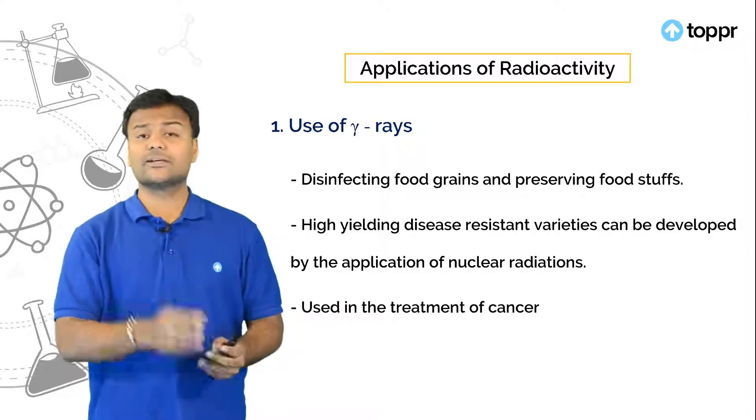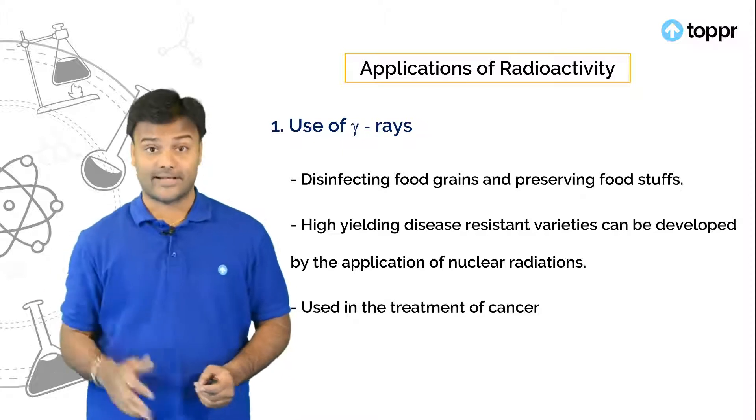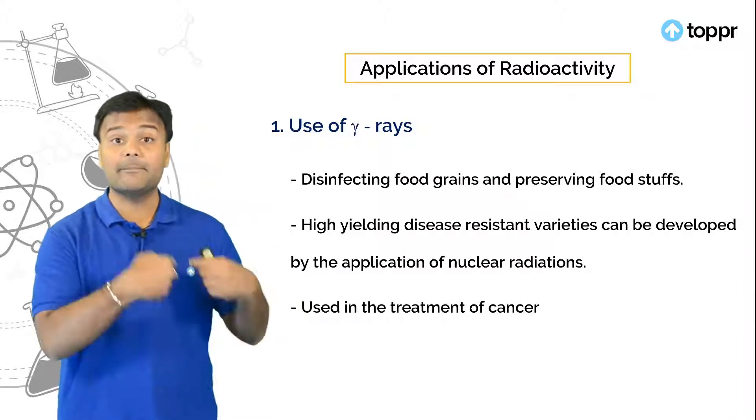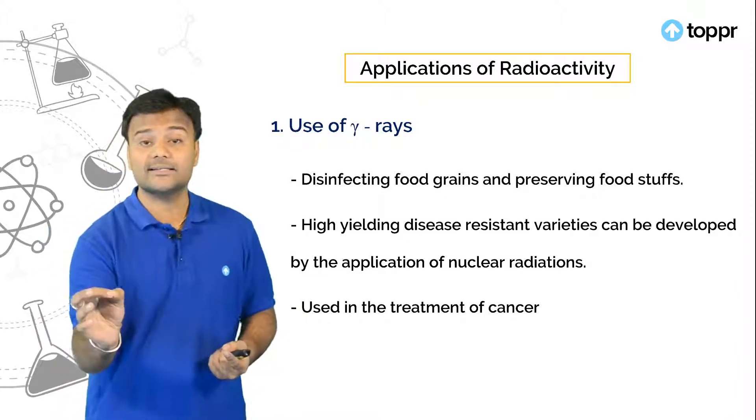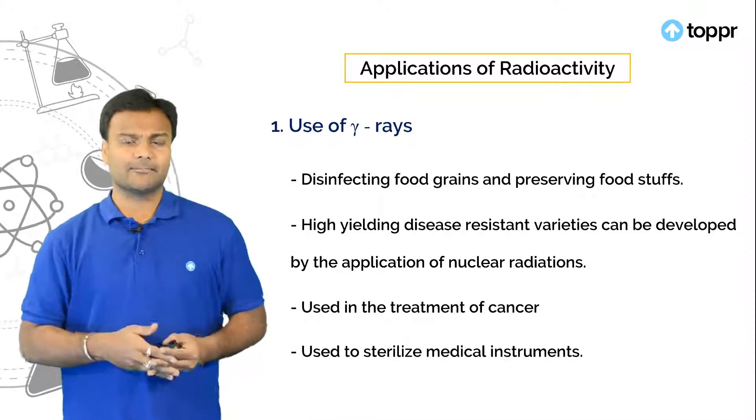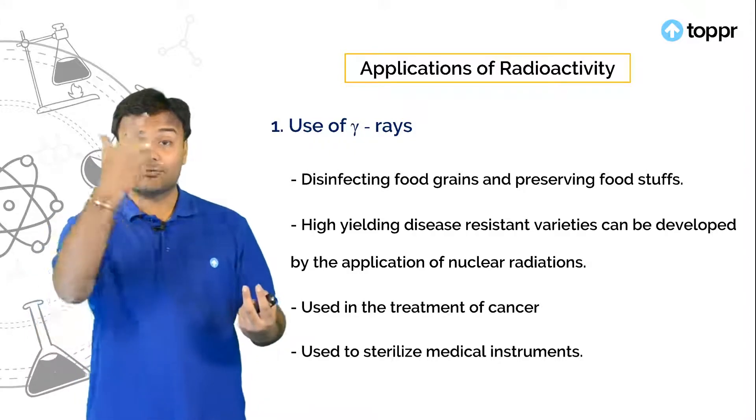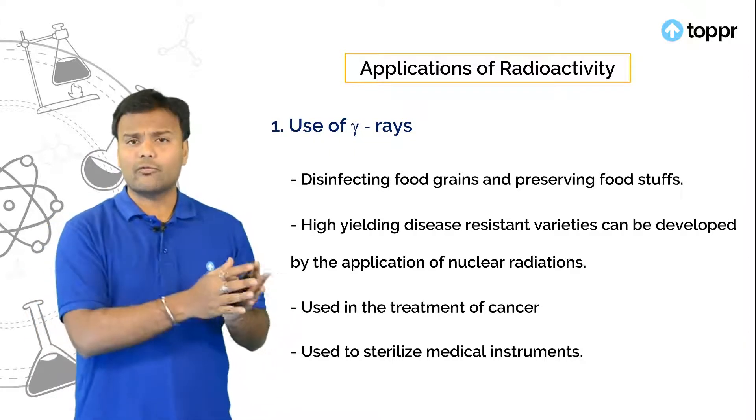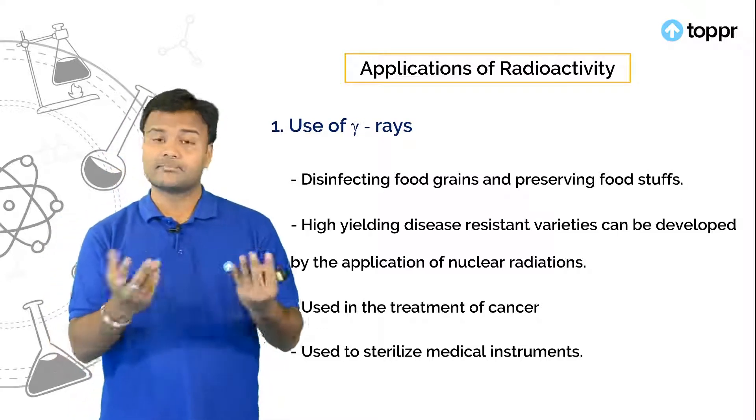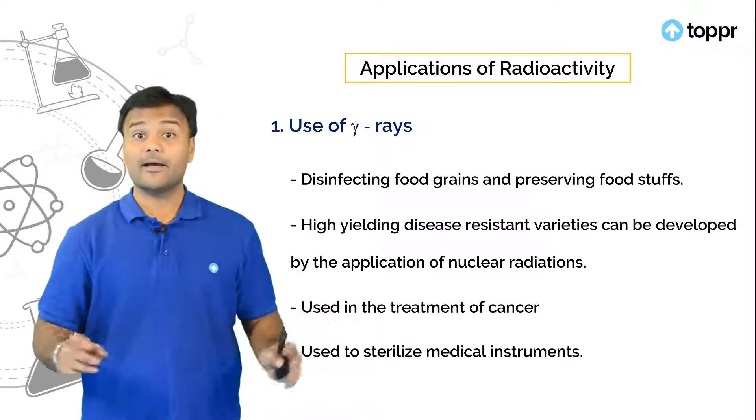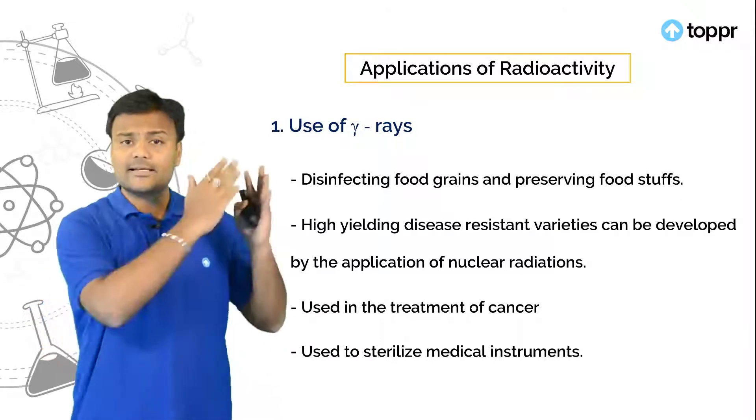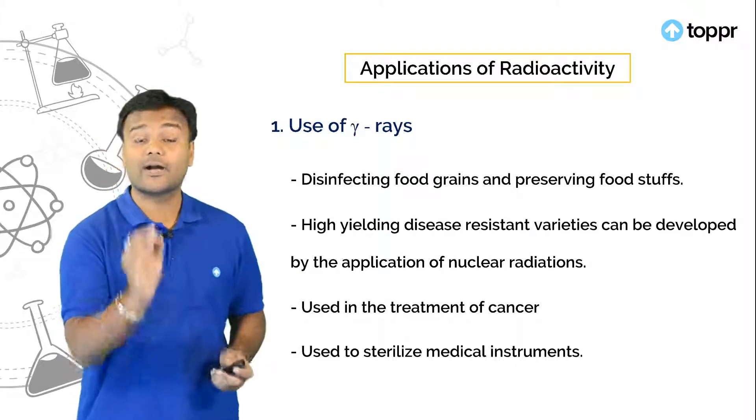And we also use these gamma rays in the treatment of cancer. Especially cobalt 60. That means gamma radiations emitted by cobalt 60 will be useful in the treatment of cancer. Also if you see like syringes or blood transfusion plastics, so how do you sterilize those? If you boil it plastic or rubber then they undergo degradation. But those can be sterilized using gamma radiation. So these are the some of the uses of gamma rays.